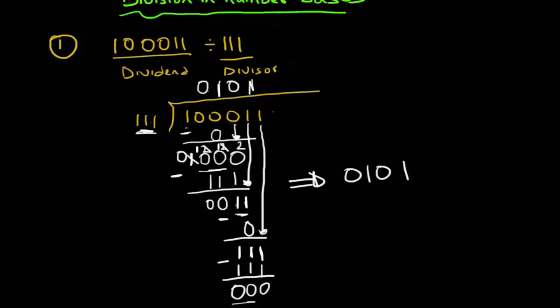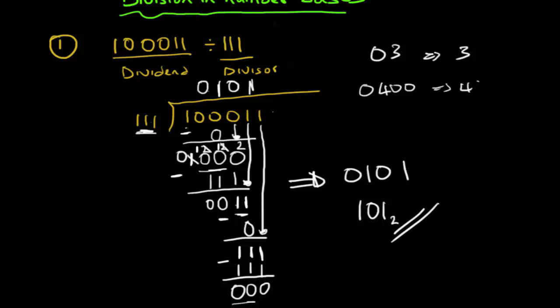My answer is '0101', which can also be written as '101' in base two. The leading zero is useless — just as '03' is the same as '3', or '0400' is the same as '400'. So remember: if the number inside the division symbol is less, you put zero; if bigger, you put one. Let's take another example.